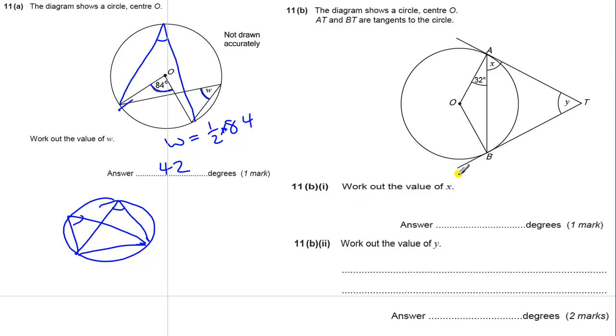Okay, part B. We have some tangents to circle. Things we need to know about tangents: tangents always form right angles with the radius of the circle. So that's going to help us a lot in this question.